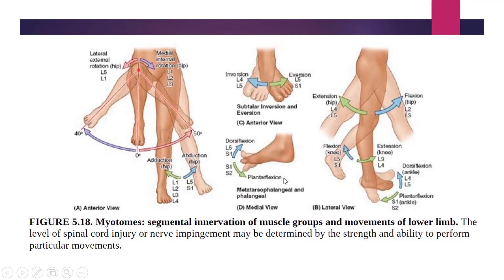The diagram below shows plantar flexion and dorsiflexion of toes at the metatarsophalangeal and phalangeal joints. Dorsiflexion of the toes means moving them toward the dorsal surface of the foot, and plantar flexion means moving them toward the sole. Dorsiflexion is caused by muscles innervated by L5 and S1, while plantar flexion is caused by muscles innervated by S1 and S2.